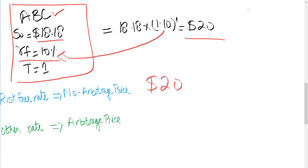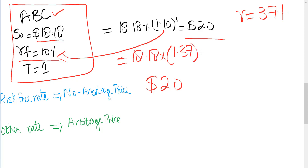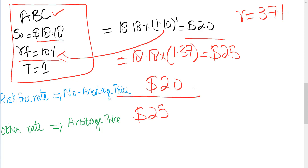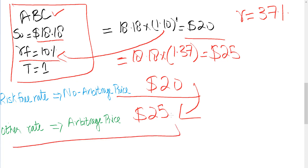Now assume that you have used a rate other than the risk-free rate to value the contract — assume that you have used 37%. At 37%, the no-arbitrage price will be close to $25. So if the forward price is not $20 and it is priced either lower or higher than $20, we can say that at this price there is an arbitrage opportunity available.